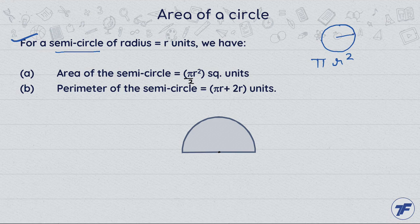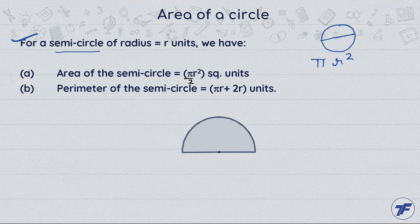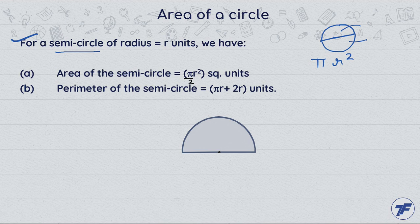A semicircle is a chord passing through the center that divides the circle into two equal areas or two equal parts. These equal parts are called semicircles - half of the circle in simple language.